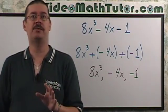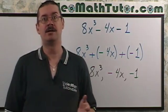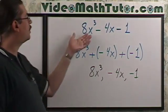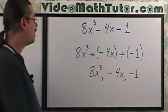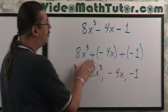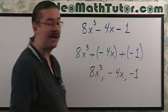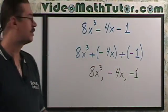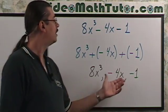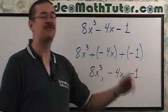Subtraction can always be rewritten as add in the opposite. So, for example, if you're given 8x cubed minus 4x minus 1, we can rewrite that as follows: 8x cubed plus a negative 4x plus a negative 1. So, to list the terms, all we have to do is this: 8x cubed, negative 4x, negative 1.